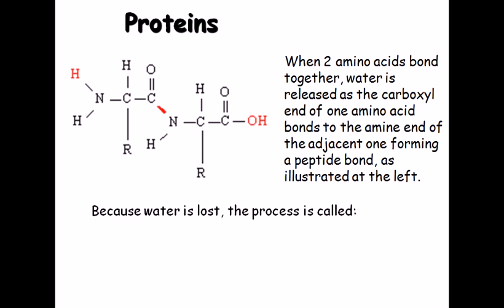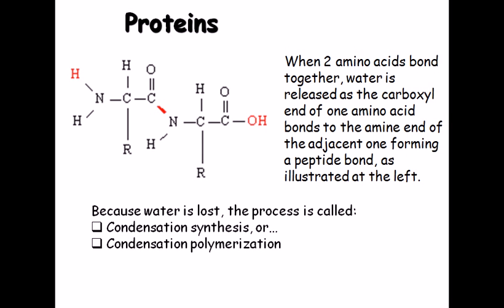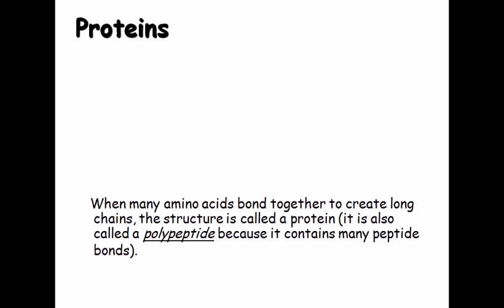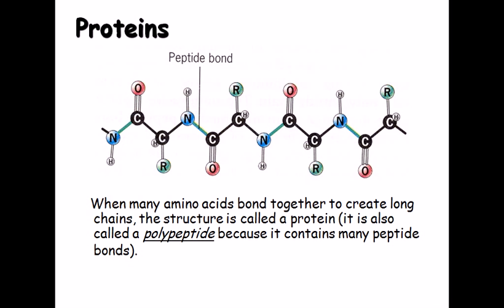Because water is lost, the process is called condensation synthesis or condensation polymerization, since condensation is the driving force for polymerizing amino acids into proteins. When many amino acids bond together in a long chain, the structure is called a protein, also called a polypeptide. The bond between the CO and NH group is called the peptide bond, and the alpha carbon is present at each amino acid unit.